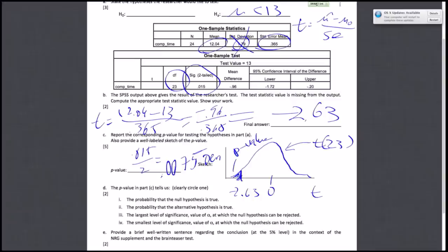You would reject at anything higher than 0.07, but this is the lowest alpha that would make you still reject with a given p-value. That's exactly what answer 4 says: the smallest level of significance value of alpha at which the null hypothesis can be rejected.